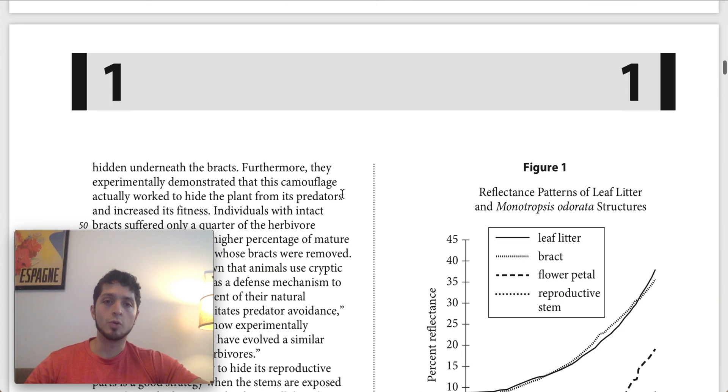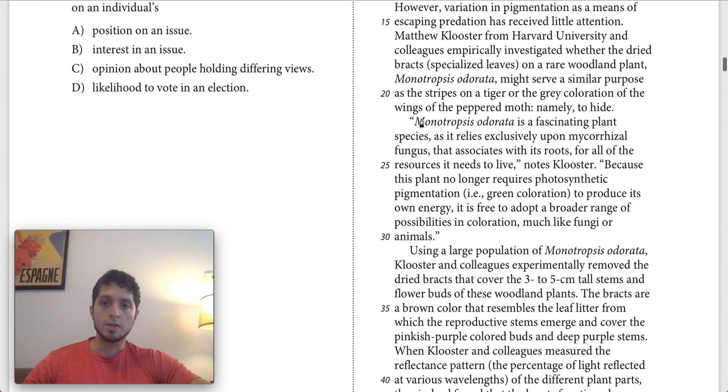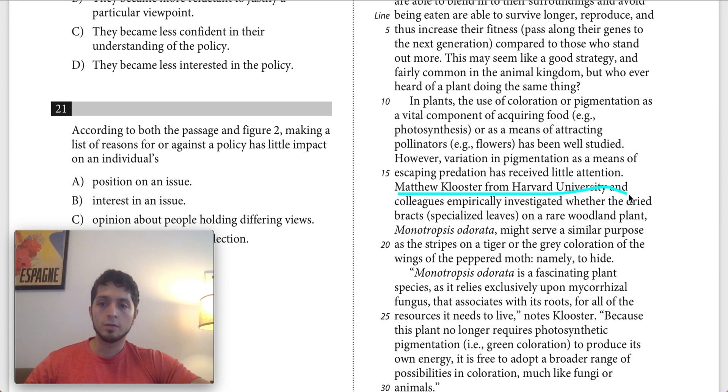Let's start with lines 16 through 21. That says Matthew Klooster from Harvard University and colleagues empirically investigated whether the dried bracts, specialized leaves on a rare woodland plant monotroposis odorata, might serve a similar purpose as the stripes on a tiger or the gray coloration of the wings of the peppered moth, namely to hide. This sentence is giving us the research question of Matthew Klooster, basically what he was trying to figure out, what he was trying to find.